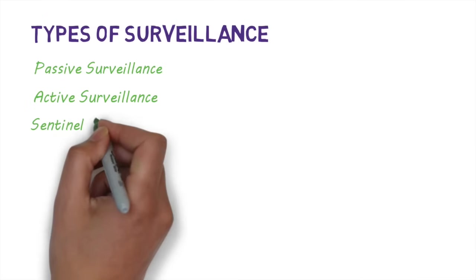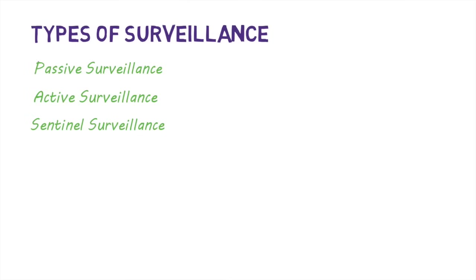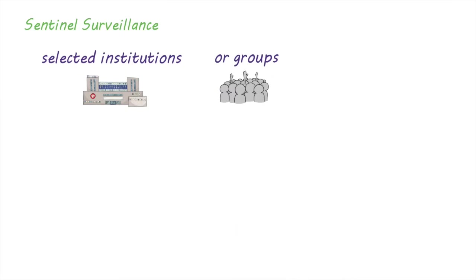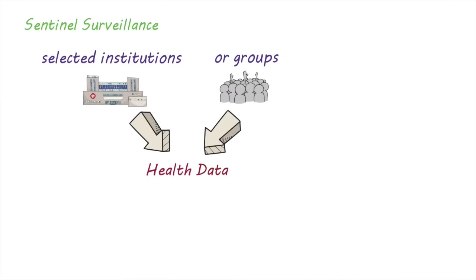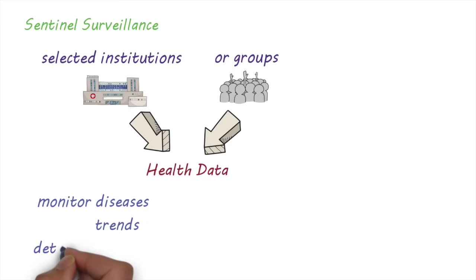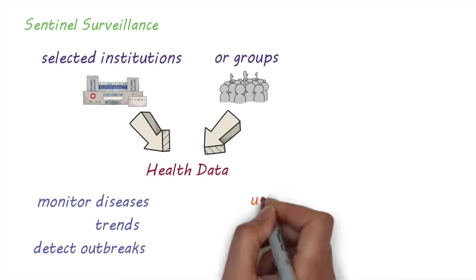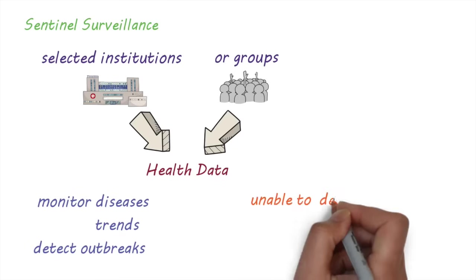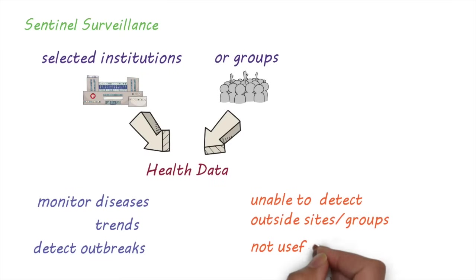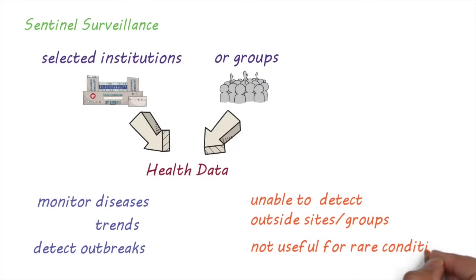Another type of surveillance is sentinel surveillance. This uses selected institutions or groups to provide health data on specific diseases or conditions. It can be useful for monitoring diseases, trends, and detecting outbreaks. A disadvantage of sentinel surveillance is that because it's restricted to a few institutions or groups, it cannot detect events that happen outside these, and therefore it's not that useful for rare or uncommon diseases.